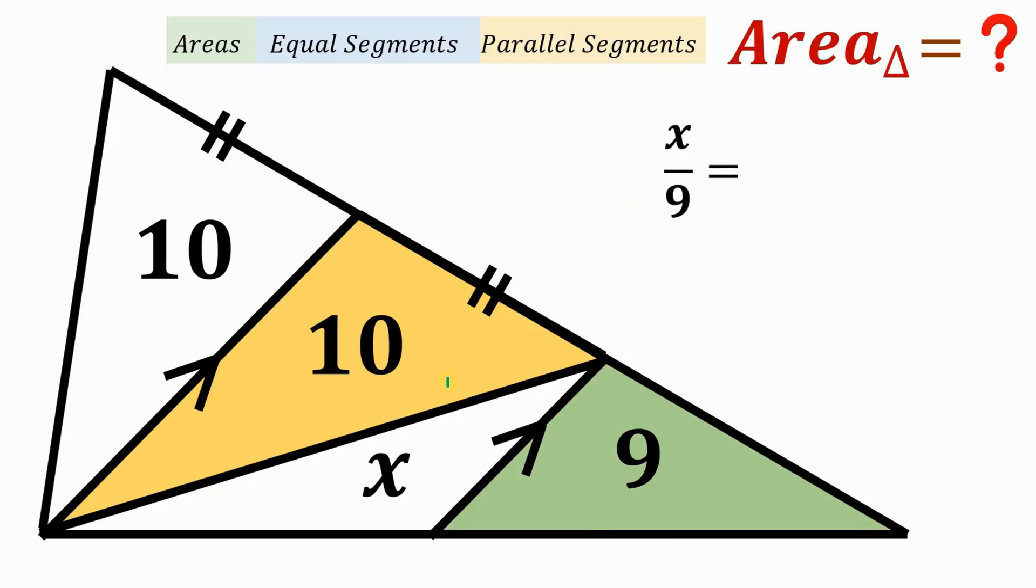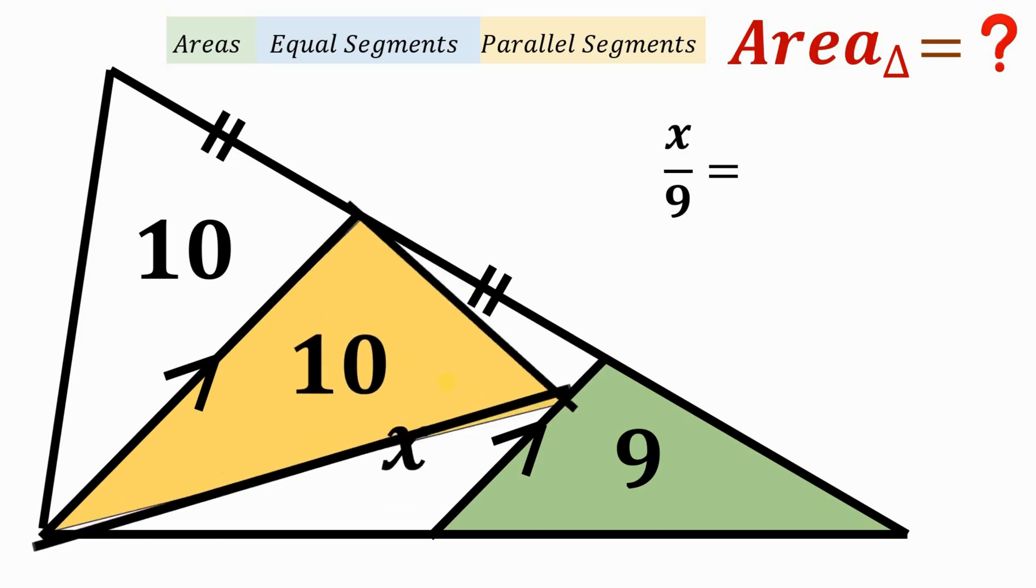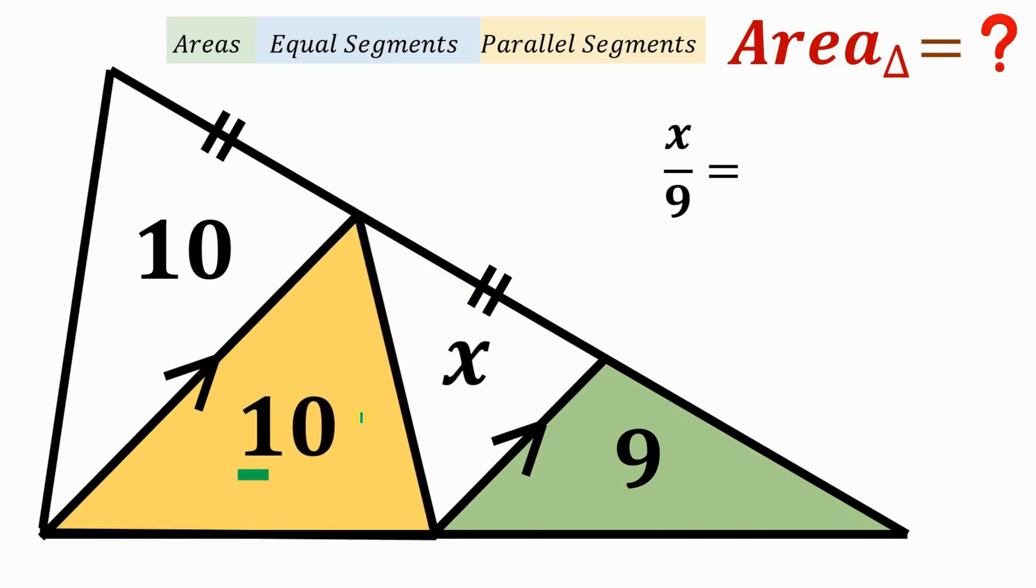Next, what we're going to do is to go back to the original figure like this. So we know this is 10 square units and this is X. Now, let's focus on this triangle. So again, we have two triangles having the same height. And therefore, we can say that the ratio of their areas is equal to the ratio of their bases.